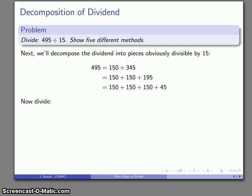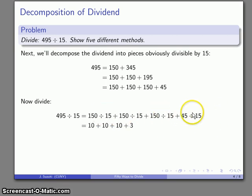So now when I want to divide by 15, I'll divide each of these pieces by 15, 150 by 15, three times. And then my last one, and that's 10, 10, 10, and 3. And so my quotient is going to be 33.